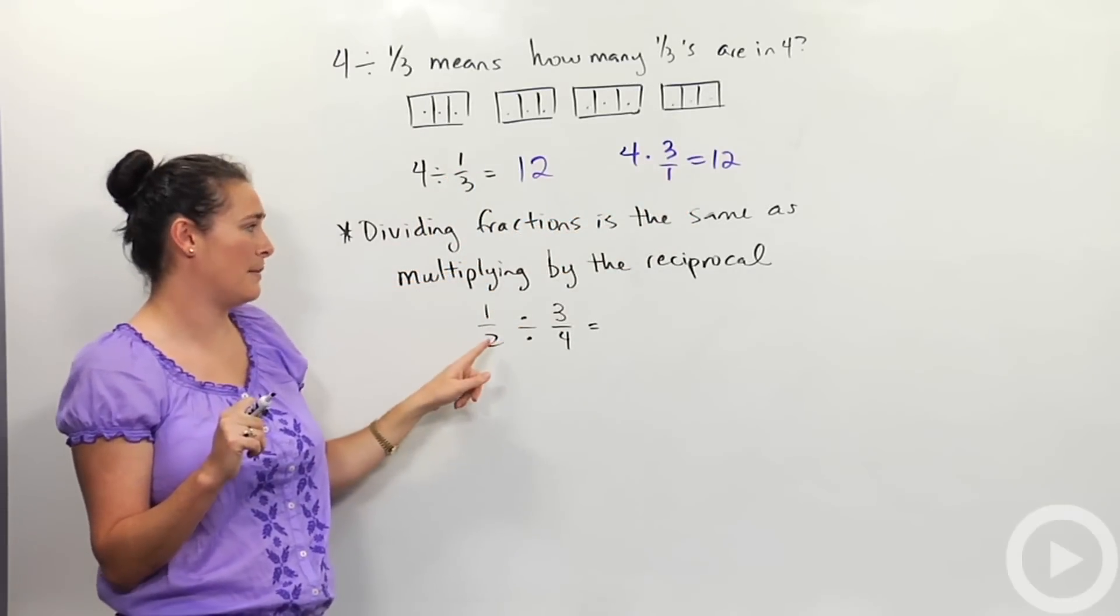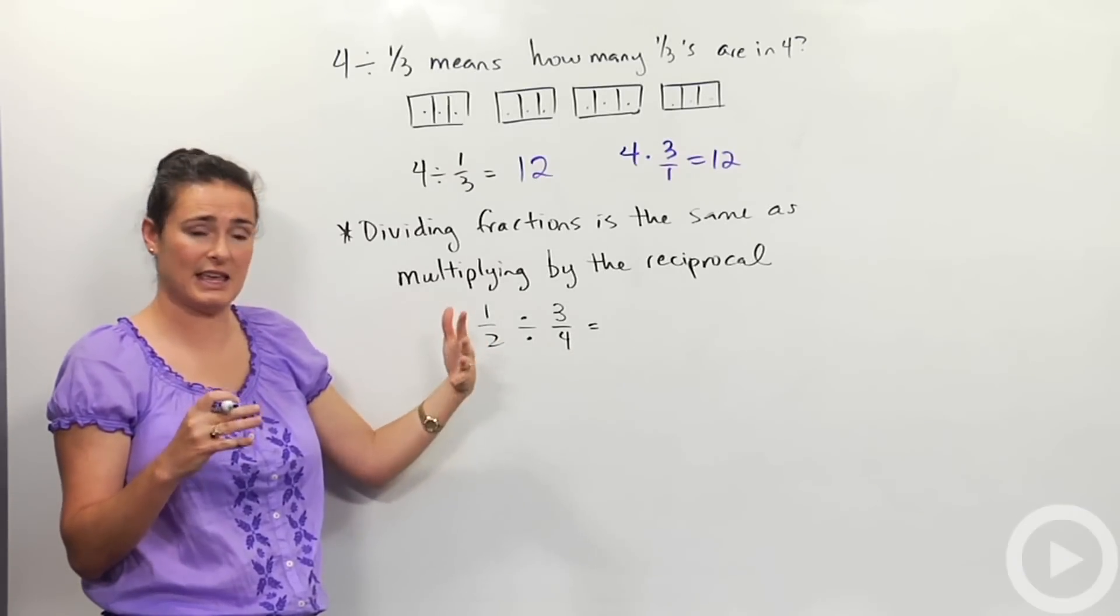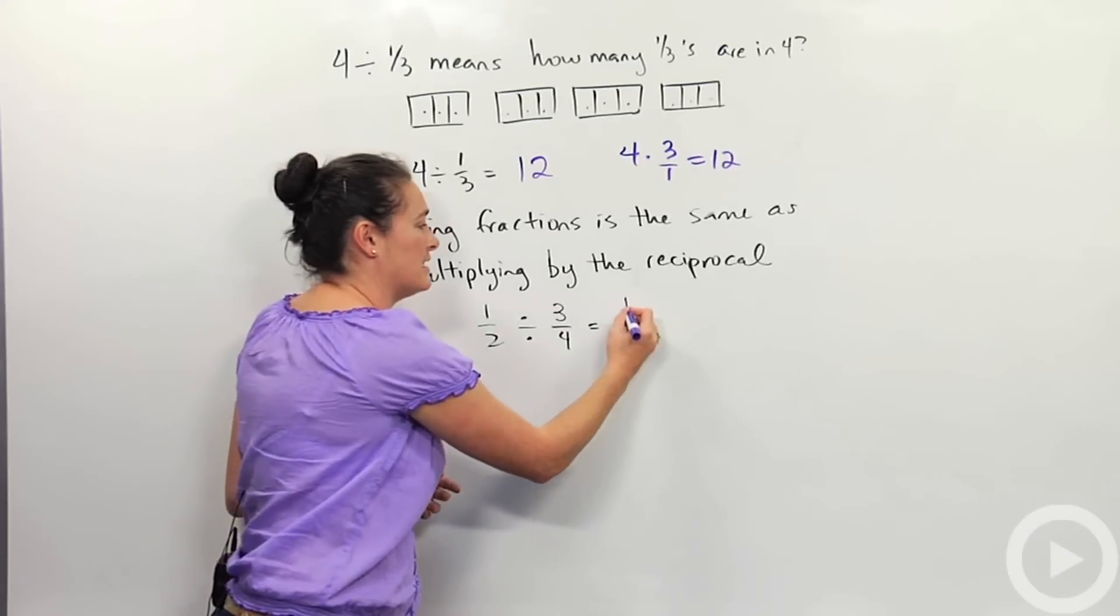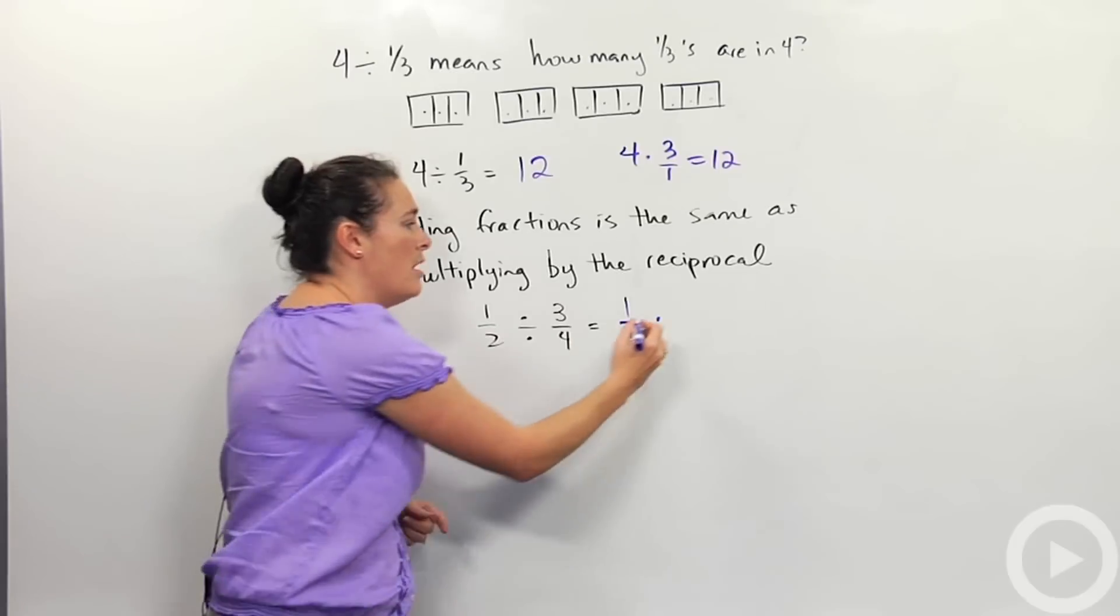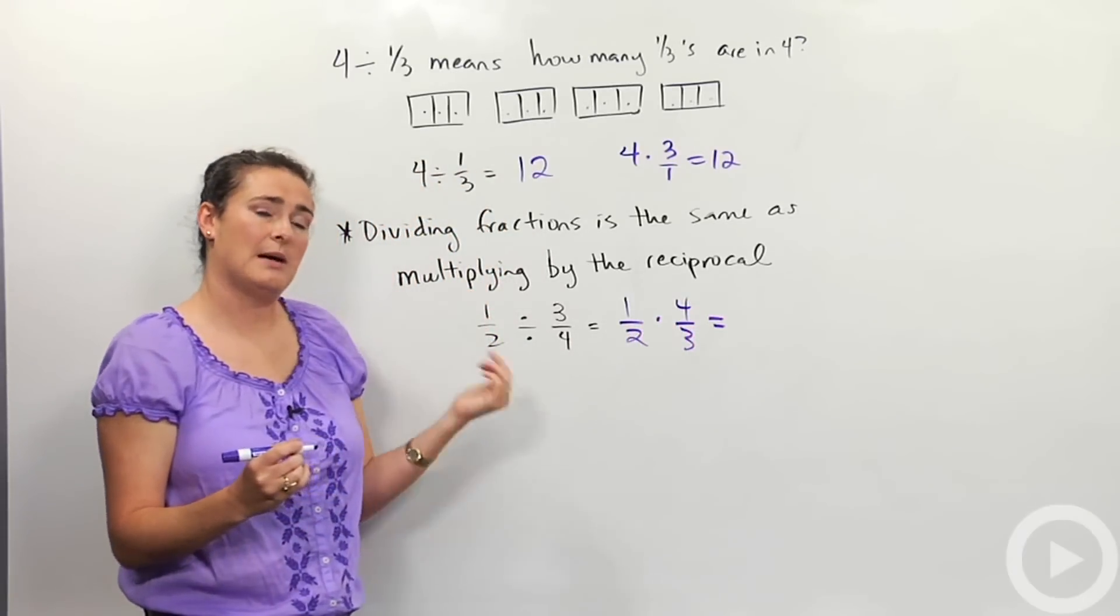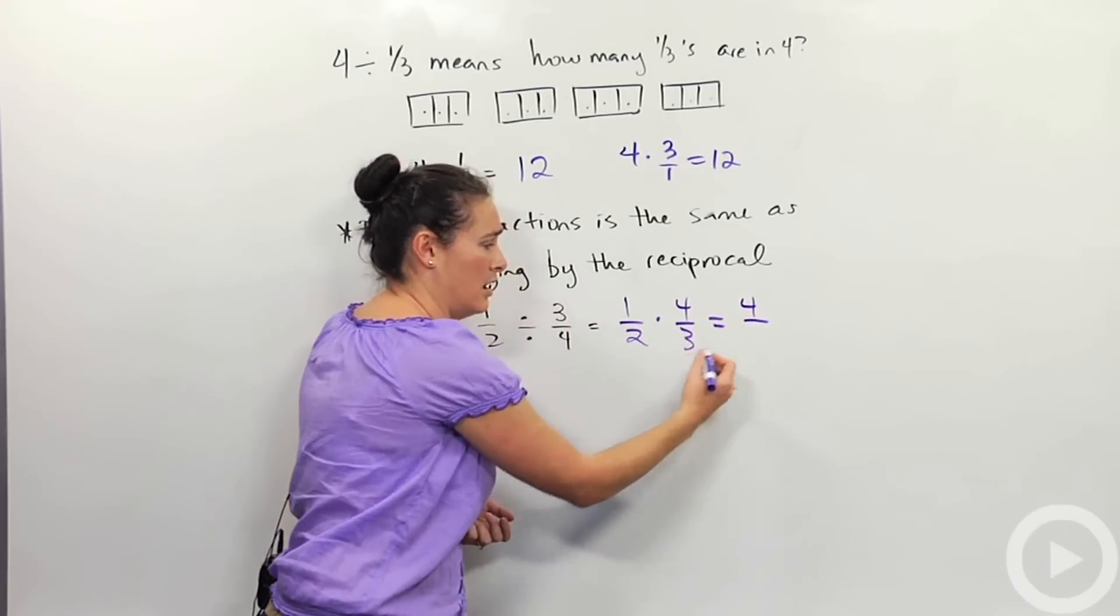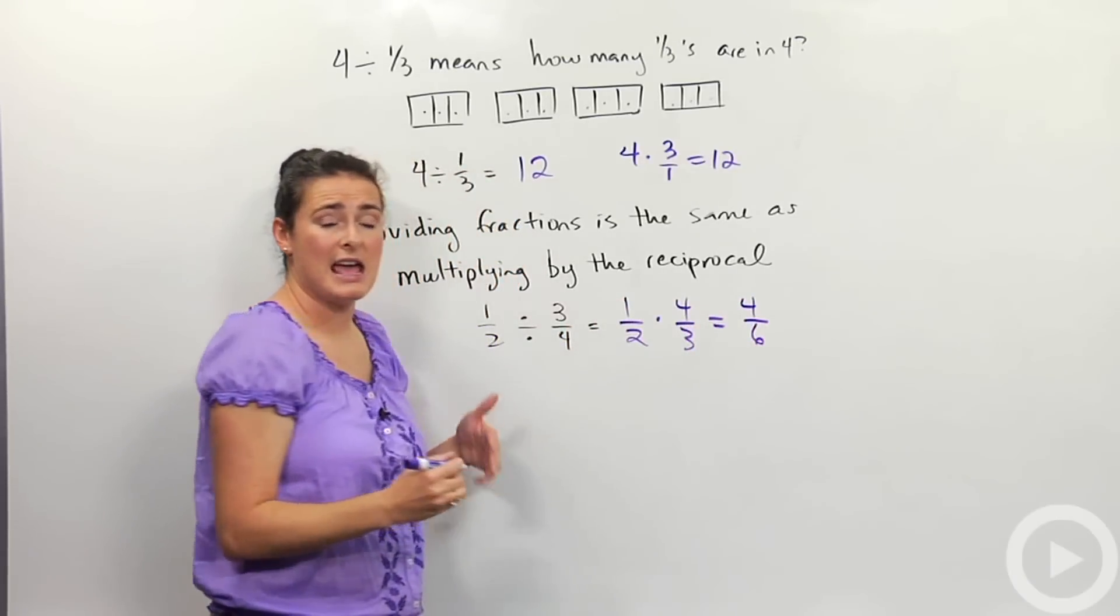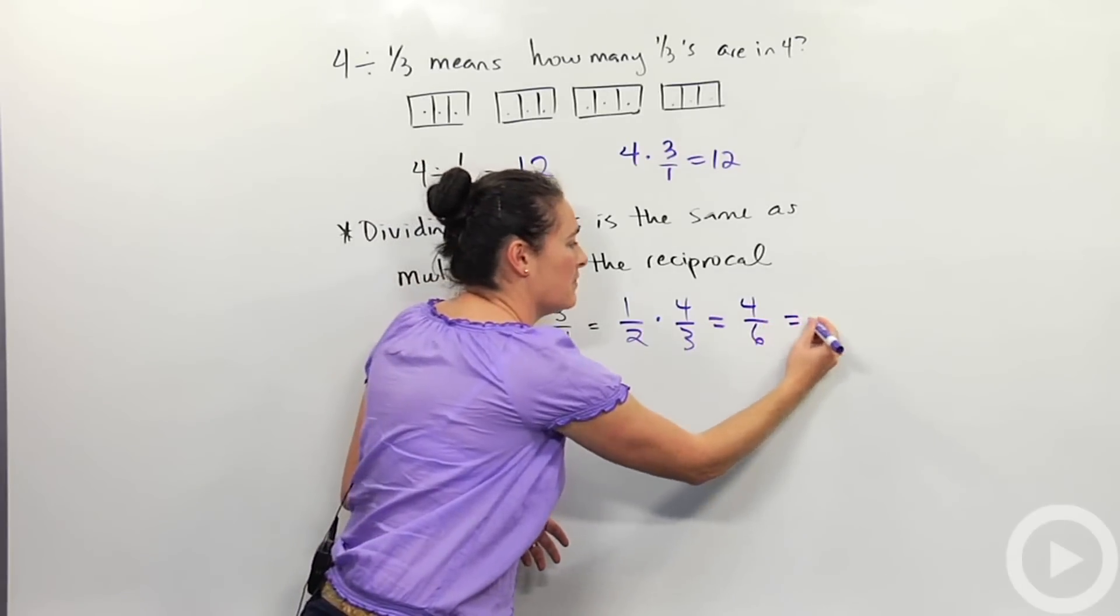Or in this next example I put on the board, if I want to do one-half divided by three-fourths, and this is a key idea, the one-half is going to stay the same, but I'm going to now multiply by the reciprocal, multiply by four-thirds. If I do that, multiply across the top, multiply across the bottom and reduce if possible. Across the top I have four times one. Across the bottom I have six. And then to reduce, I can divide top and bottom both by two to give me the final result.